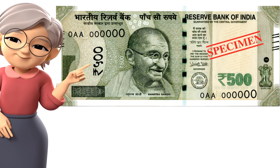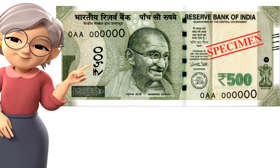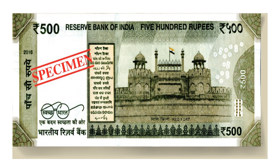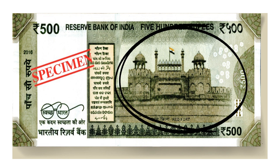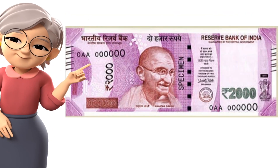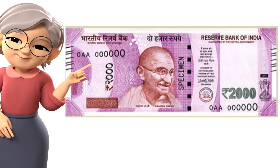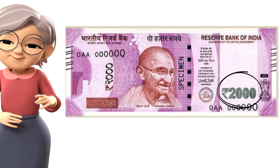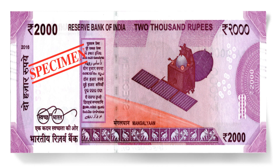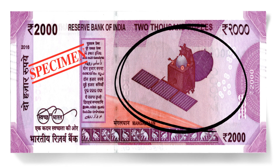This is a note of rupees 500 with Mahatma Gandhi's image and the number 500 written on it. The back side of rupees 500 shows an image of Red Fort. This is the note of rupees 2000. It shows an image of Mahatma Gandhi and the number 2000 written on it. The back side of rupees 2000 shows an image of Mangalyaan.